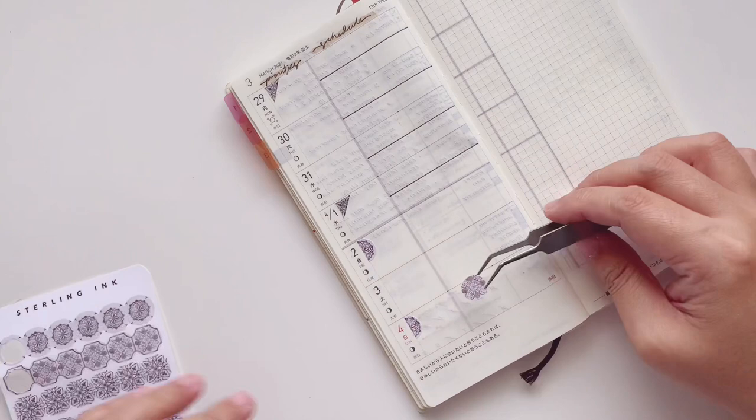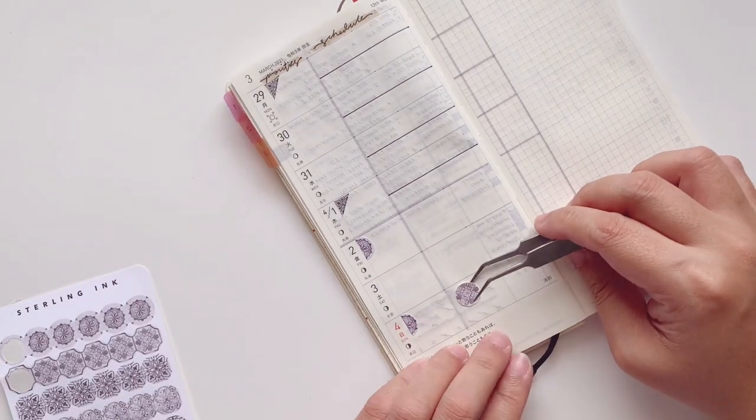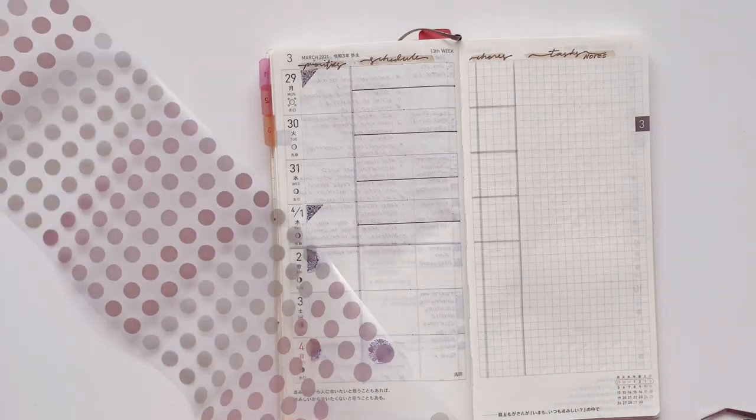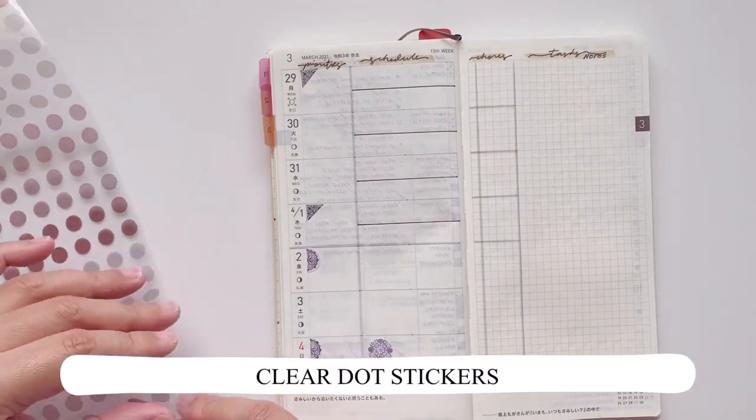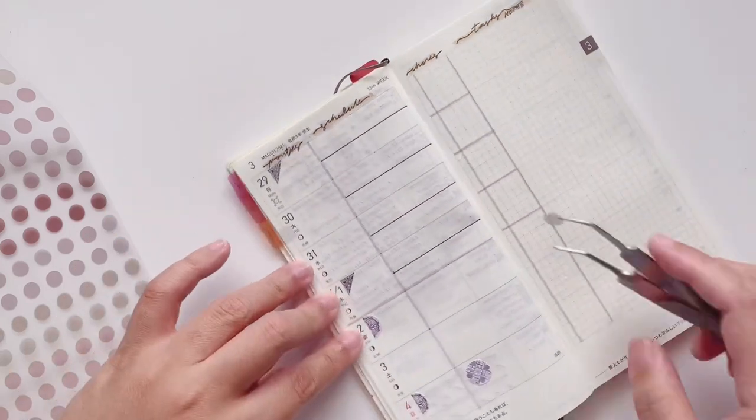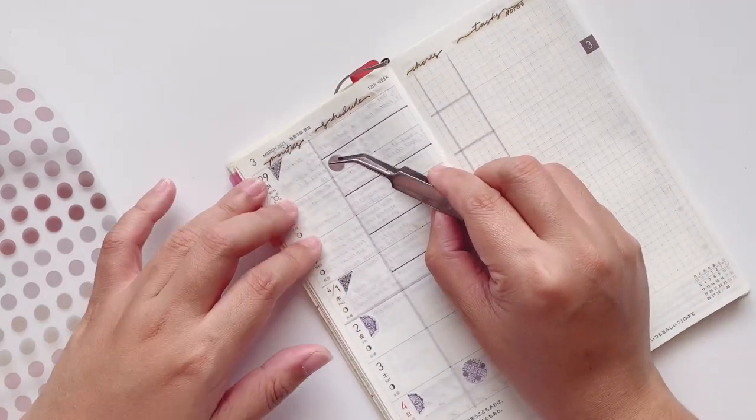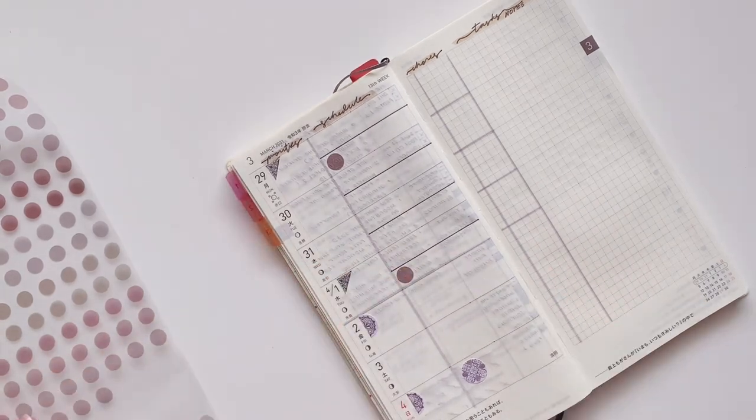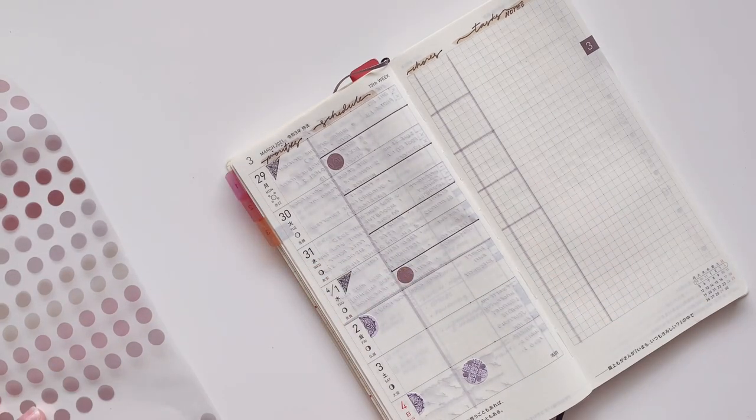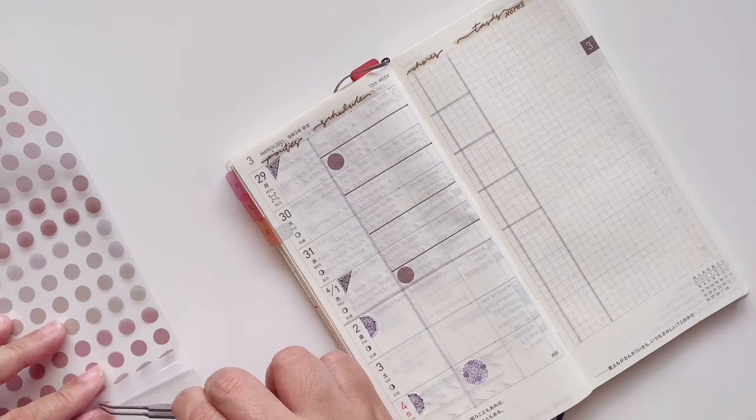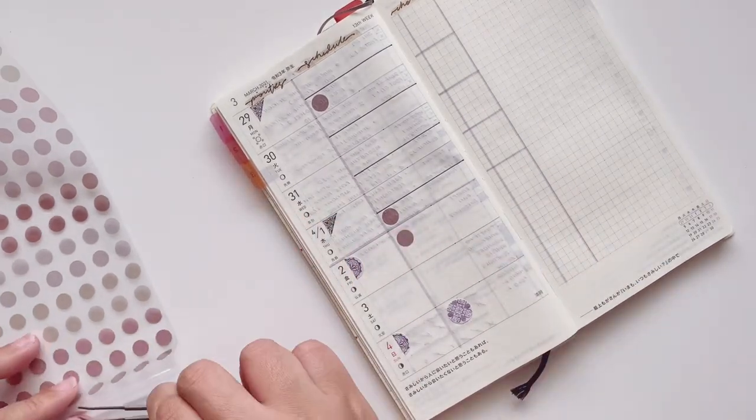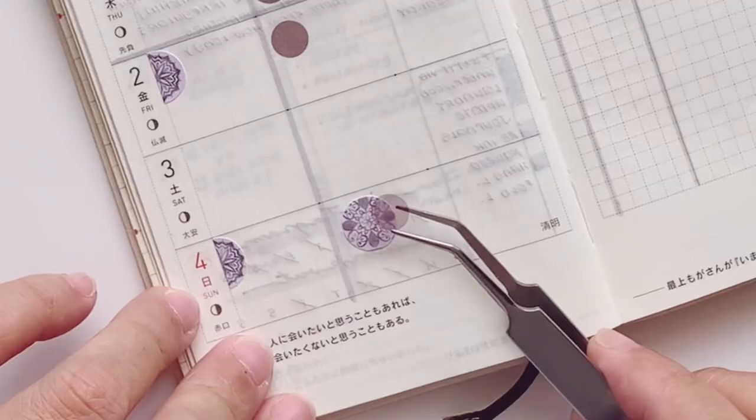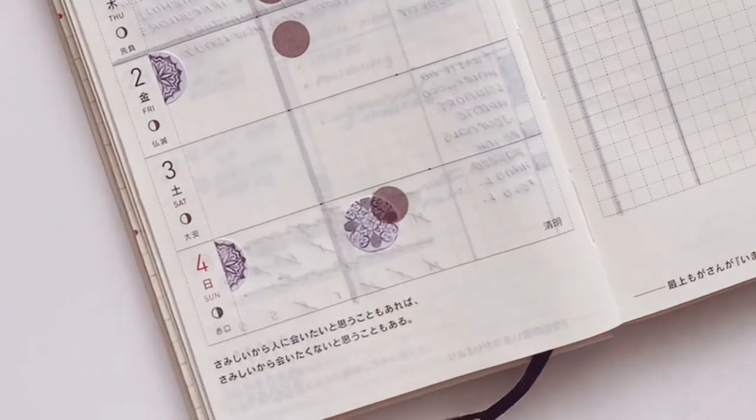Then lastly I will put a round sticker on Sunday. Next I'm going to be playing with the clear dot stickers from AliExpress and I highly recommend these although I feel like I lean towards the washi dot stickers more. And I'm putting them down on days that I have an appointment as well as something that I want to mark on Friday. And then I am layering it over the round sticker from Sterling Ink to indicate a very special day.